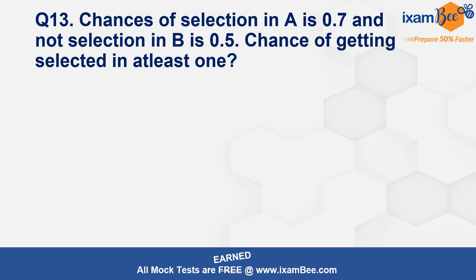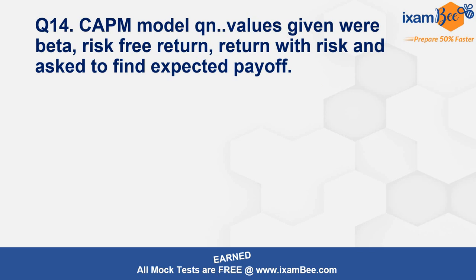There was also a probability question where probabilities of getting selected in one company and not selected in another were given, and you had to find the probability of getting selected in at least one. The easier approach is: 1 minus the probability of not getting selected in any of these. The answer comes out to be approximately 0.85.